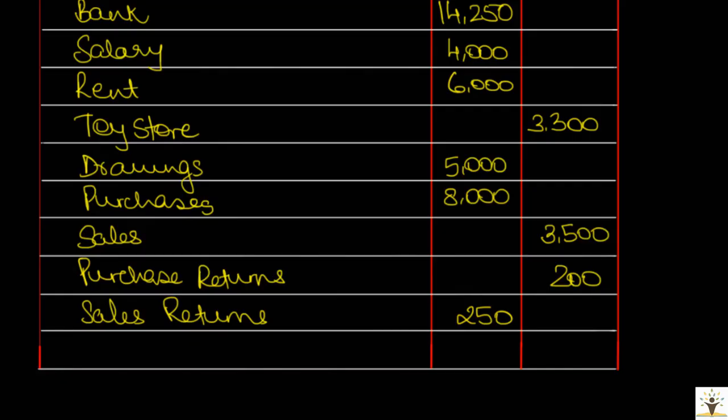In the double entry bookkeeping, transactions are recorded in such a way that the debit is always equal to credit. In other words, for every debit effect given, there is an equal credit effect in some other account. Hence, it follows that the total of all debit balances equal to the total of all credit balances.